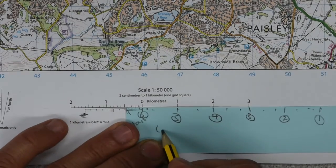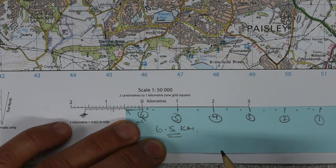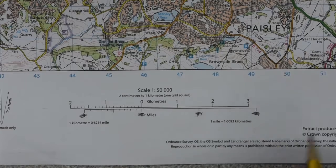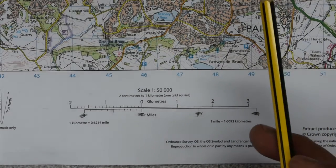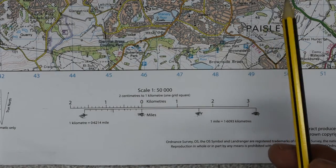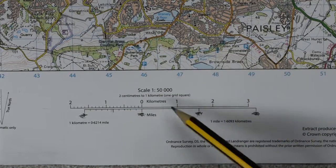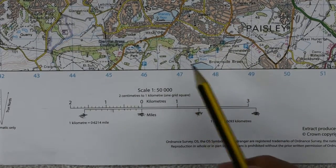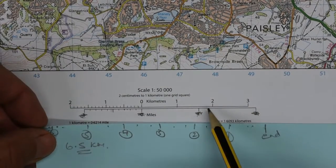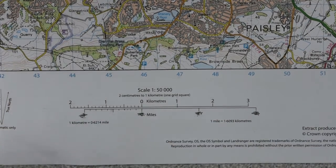Let's call it 6.5 kilometres. And that's your distance. Hopefully that's nice and clear. The best way to get better at this is to get yourself an Ordnance Survey map, or download one from Digimaps for Schools if you've got a subscription, and just practise measuring distances. Most mistakes are made when you're transferring your distance along your piece of paper onto the actual scale, so do be careful there. Thanks for watching.